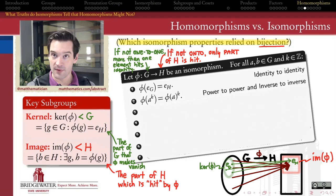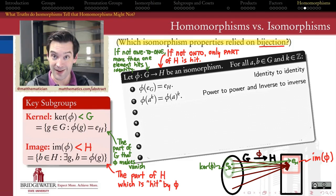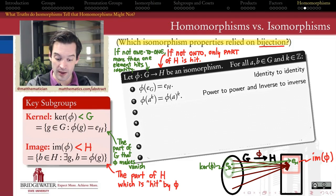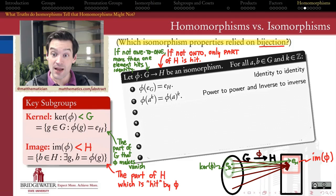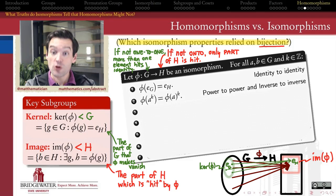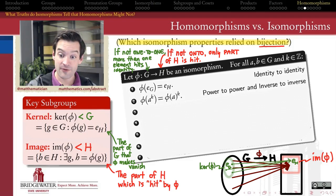These two pieces — the image and the kernel — are the most important pieces of any groups we need to understand in this course. If we can understand the image of a homomorphism that might not be onto, as well as the kernel of a homomorphism that might not be one-to-one, we can compensate for our function not being a bijection and go from a homomorphism to an isomorphism on a smaller subgroup. So let's look at properties from isomorphisms and determine whether they remain true when we give up one-to-one and onto.